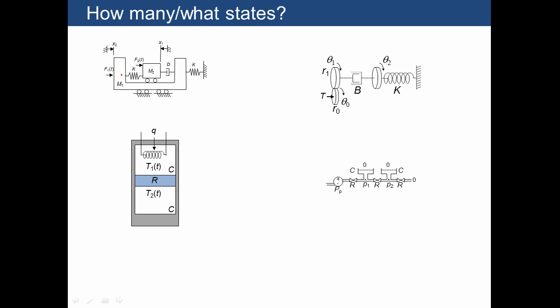Here are some other examples where we're just going to count the states and define them. So here we have two masses and two springs, so that's going to give us four energy-storing elements, and we would choose state variables as the velocities of the two masses and the deflections of the two springs.